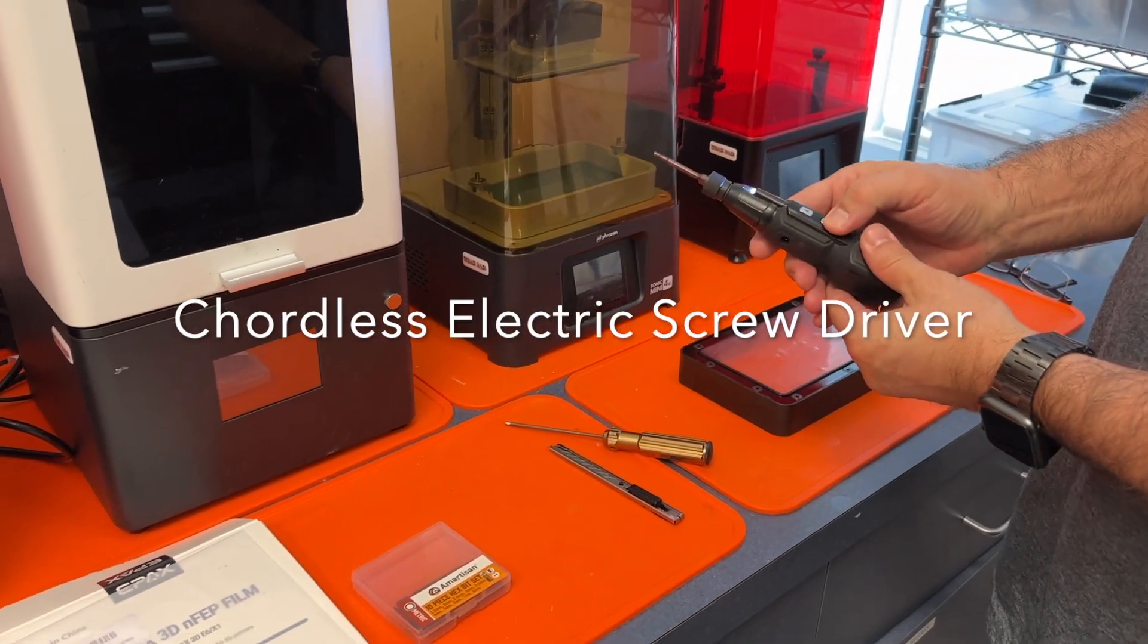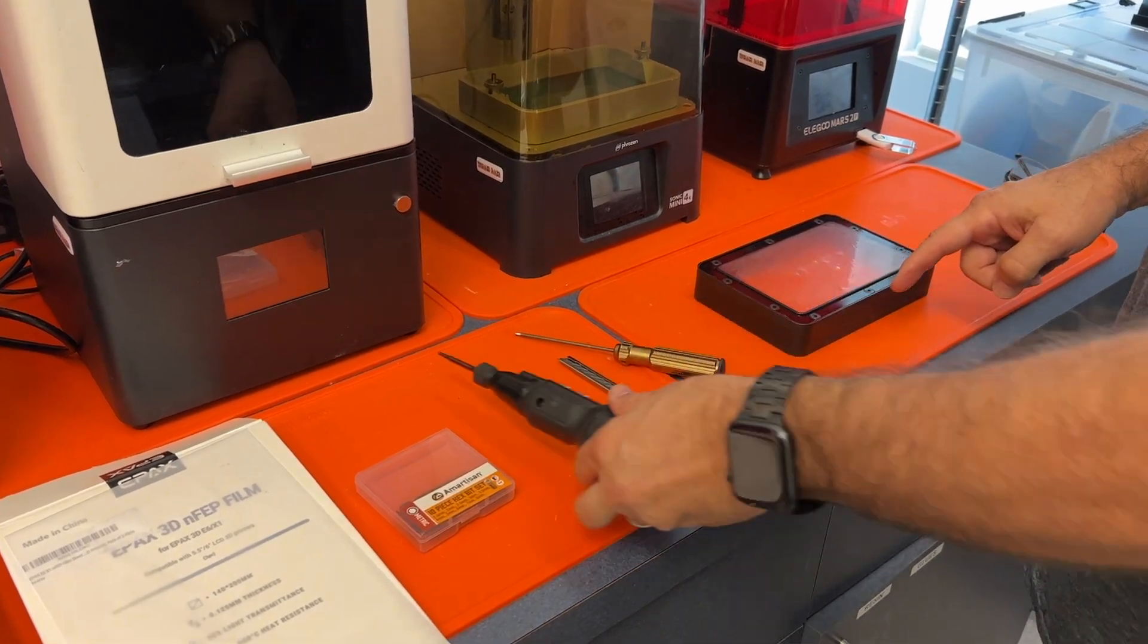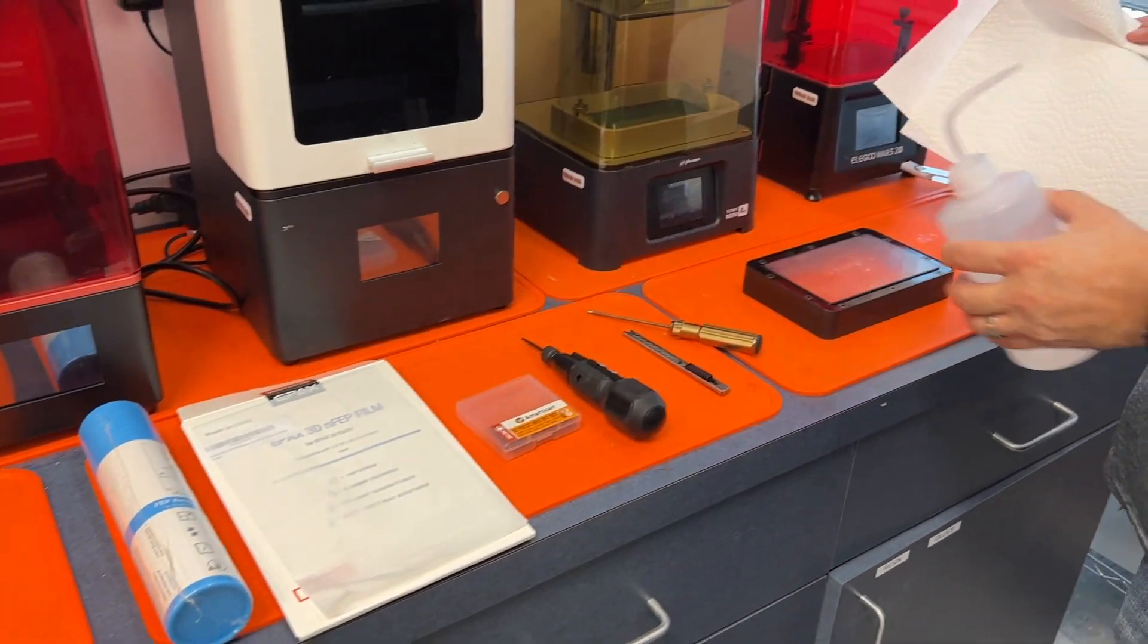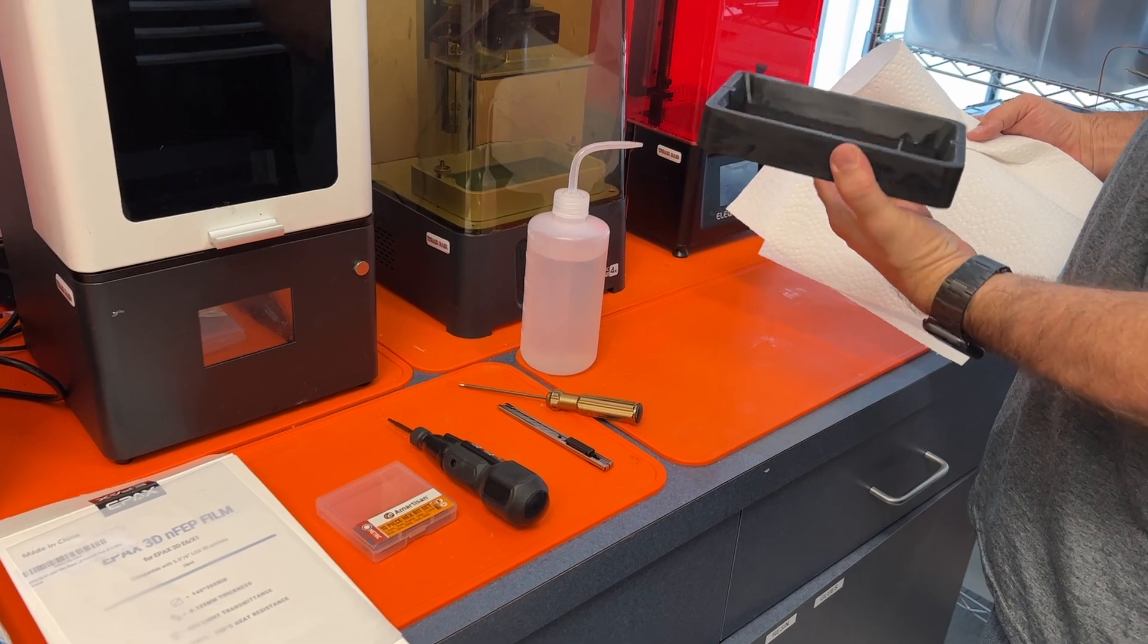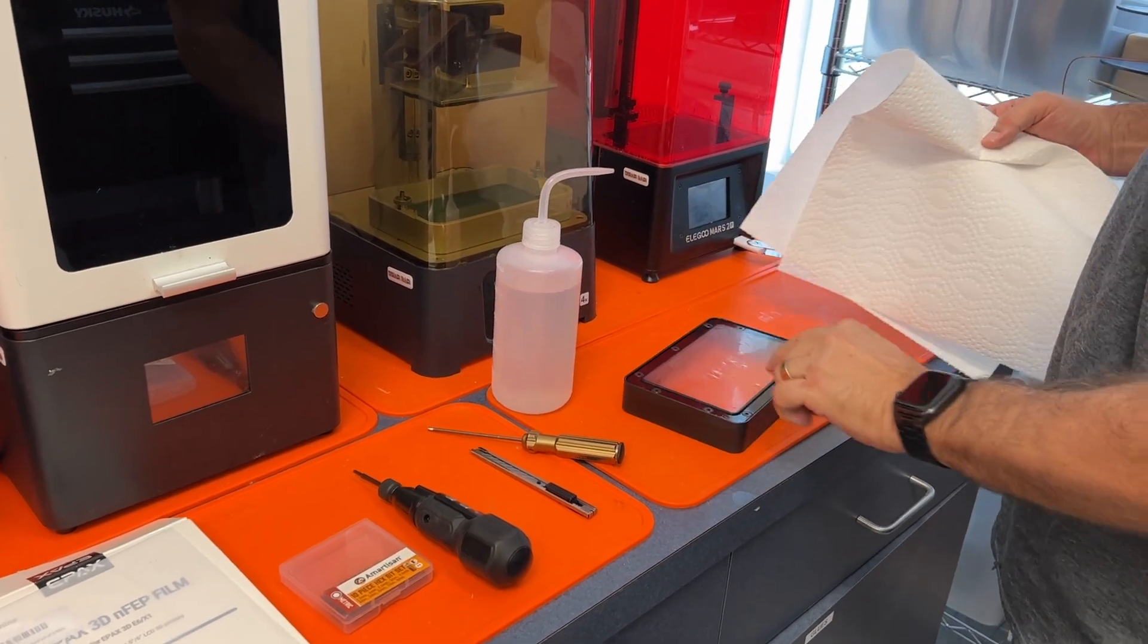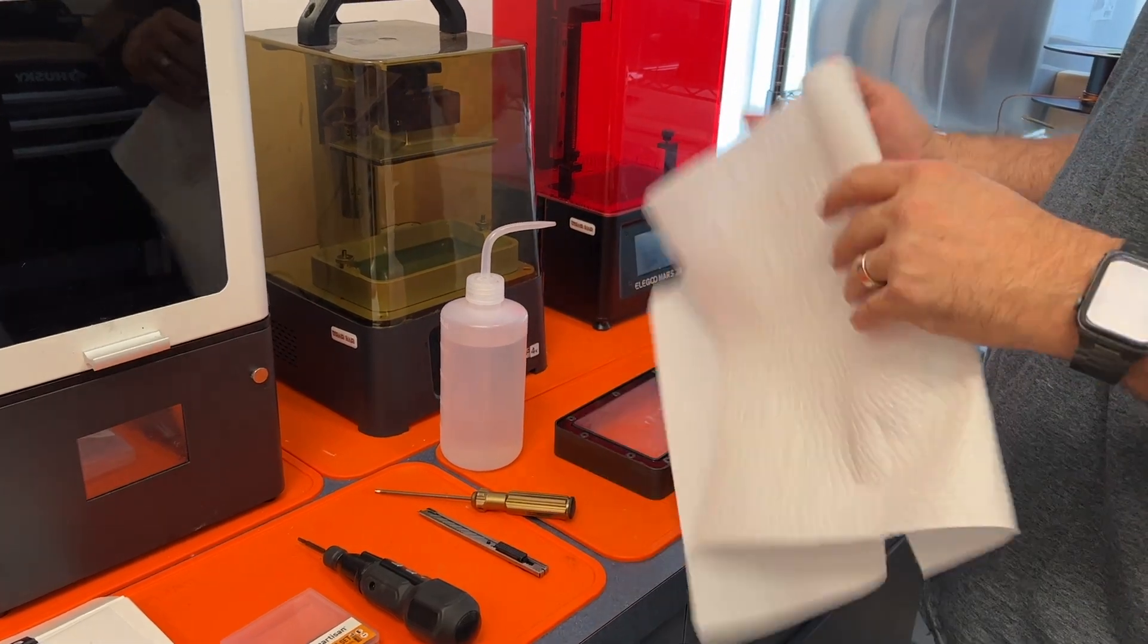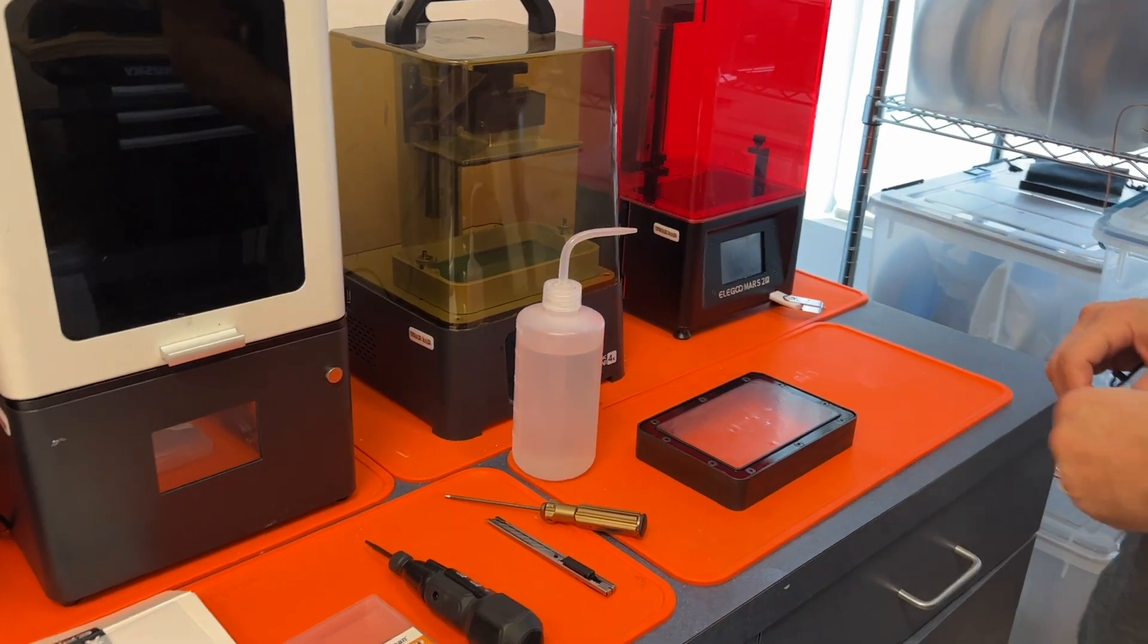And you're going to need a 2.5mm hex screwdriver for the screws. I also tend to love these things, especially when you have so many screws you have to deal with. You also have to have some alcohol and paper towel. I like to clean the part very well, especially after I remove the FEP. There's probably some resin trapped under here and I like to work over paper towel once I'm ready. So let me get to it. I'll show you the steps.